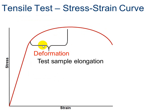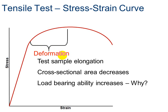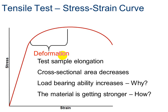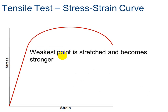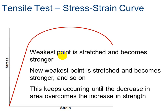Your test sample becomes deformed — way too long — so please mark your graph with a curly brace and the word deformation. Your cross-sectional area is getting smaller and smaller because as it gets longer, the thickness in the middle decreases. But the load-bearing ability actually increases because the material is getting stronger — each weakest point is stretched and becomes stronger, until each new weakest point is stretched and becomes stronger in turn. This continues until the decrease in area overcomes the increase in strength.